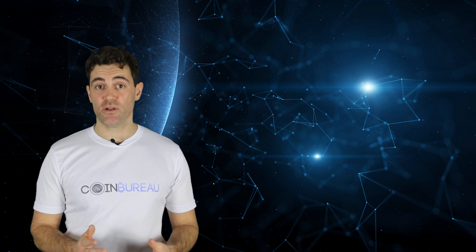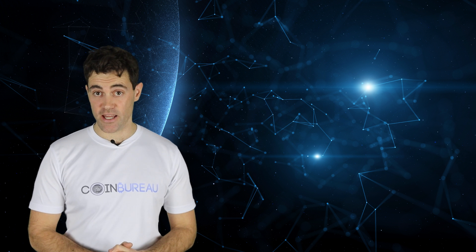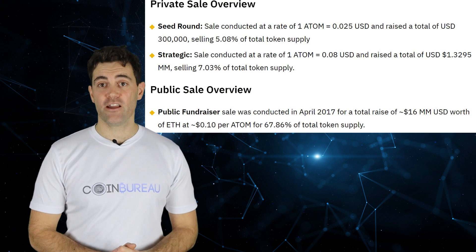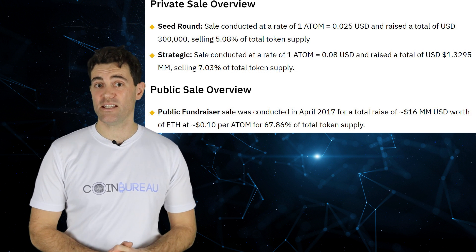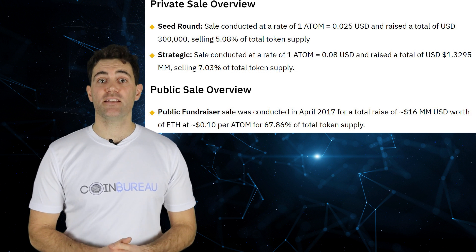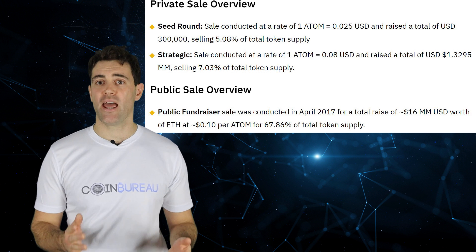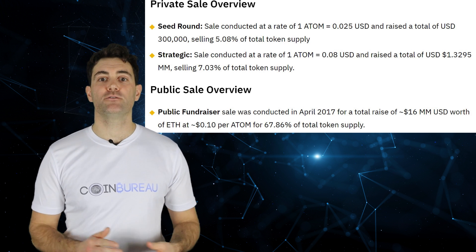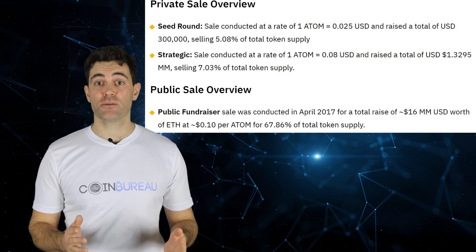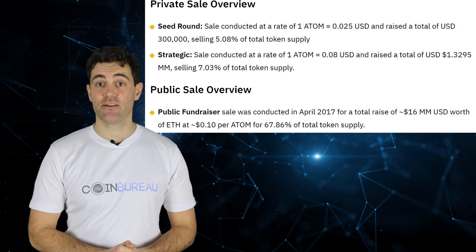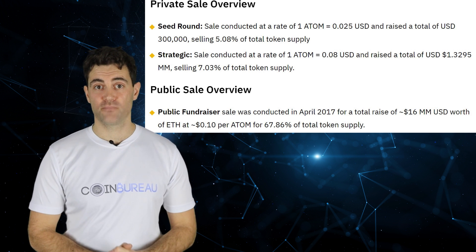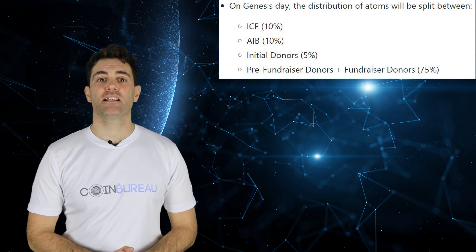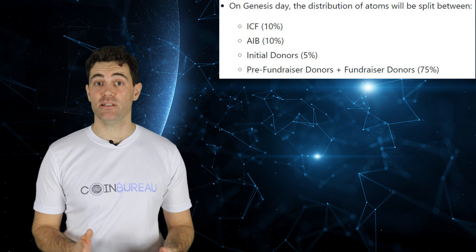Atom tokens were sold in an ICO in 2017 across three rounds. The private seed sale sold about 5% of supply at 2.5 cents per atom, raising about $300,000. The strategic private sale sold an additional 7% at about 8 cents per atom, bringing in about $1.3 million. The public crowd sale in early 2017 sold 67% of the token supply at 10 cents per atom — raising about $16 million in less than half an hour. The final 10% was retained by All In Bits Incorporated, which is the Tendermint team.